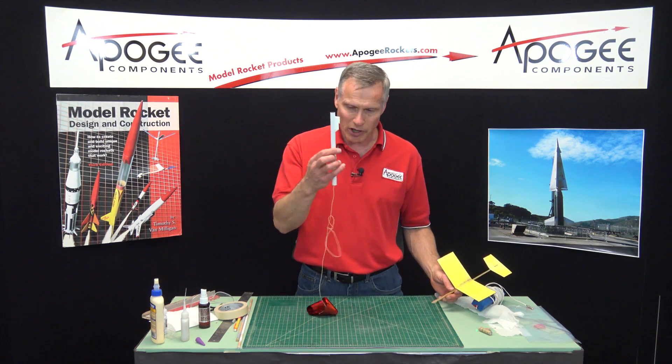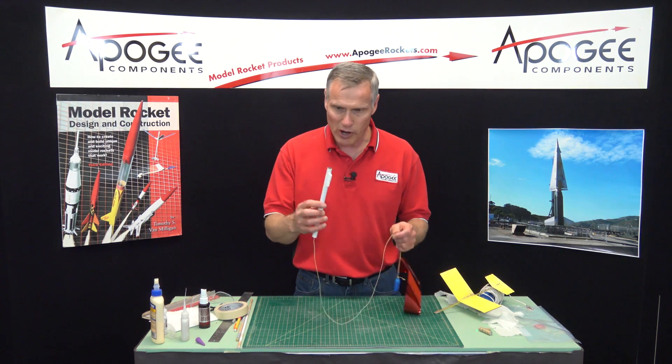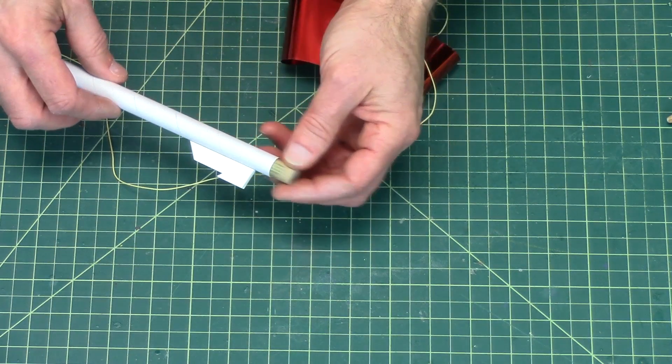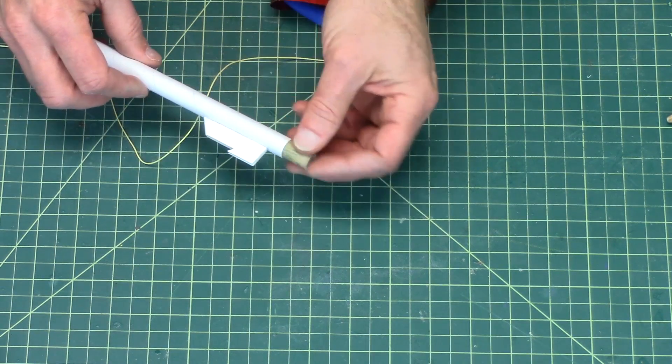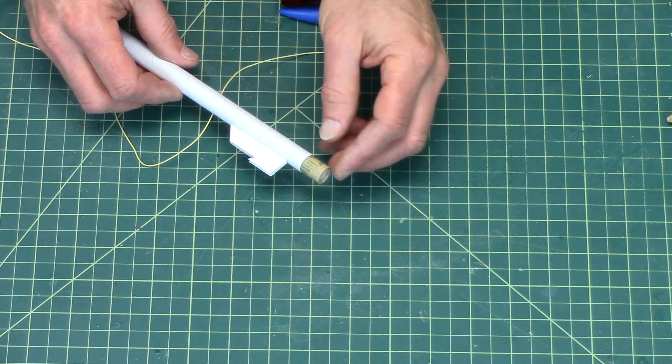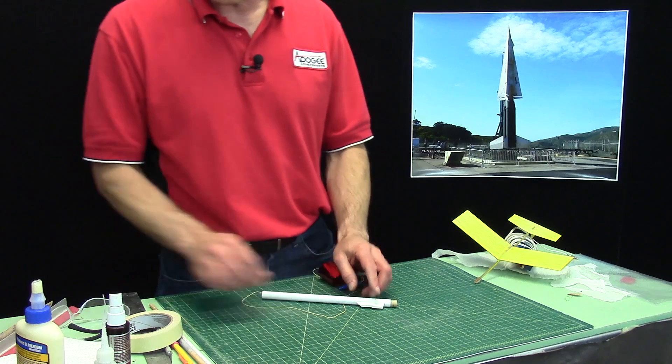Our booster pod I did not paint but you can paint that as well. To prep that you want to start by putting the rocket motor in and you can see it's hitting the engine block in there. If you don't have an engine block in there, have it hang out approximately three-eighths of an inch.